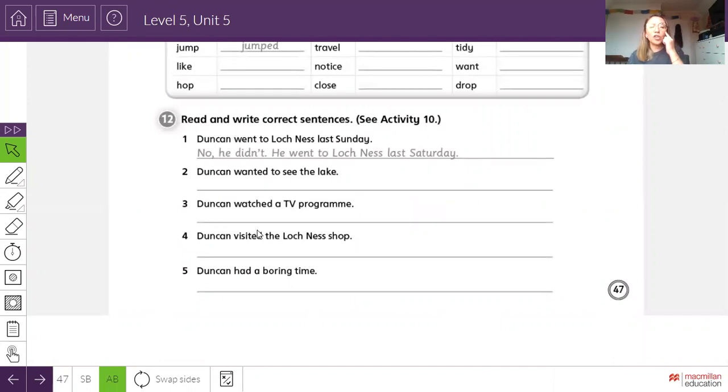What about number three? Duncan watched a TV program. Go to the letter and verify. Si no está correcta. So, no, he didn't. He. Number four. Duncan visited the Loch Ness shop. Go to the letter. Vas a la carta. Verify. It's not true. So, you say, no, he didn't. He. And number five. Duncan had a boring time. El Duncan se aburrió. Go to the letter. Vas a la carta. Verify. And if it's not, you say, no, he didn't. He. And you complete the sentence.